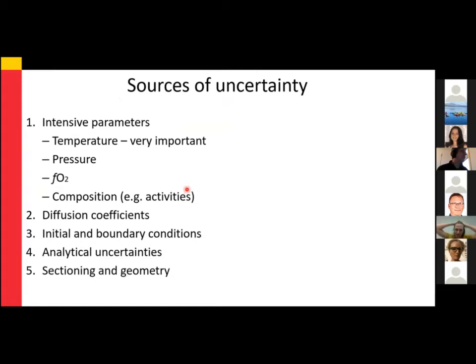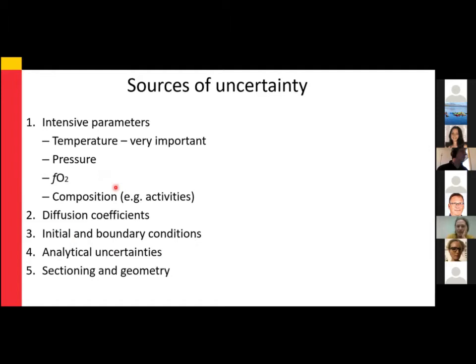As we've heard a lot in the last couple of days, there are lots of sources of uncertainty associated with diffusion chronometry. Most notably temperature and the assumptions associated with isothermal versus non-isothermal approaches. There are other parameters like pressure, fO2, compositions and activities in the melt, and the composition of the minerals themselves. There are also uncertainties in diffusion coefficients, assumptions about initial and boundary conditions, and sectioning effects. For this talk, I'm mostly focusing on uncertainty in diffusion coefficients and some intensive parameters.